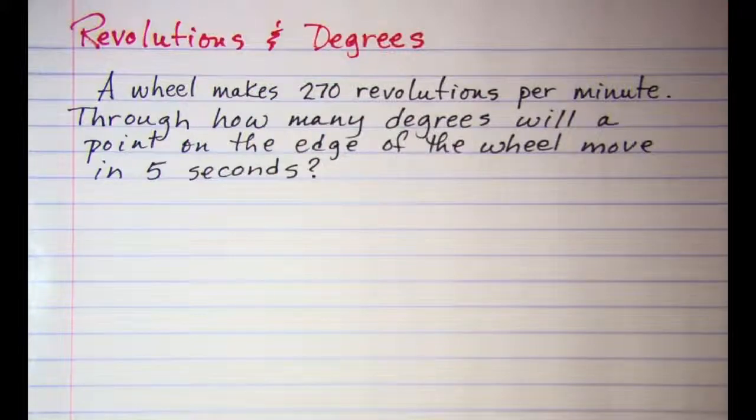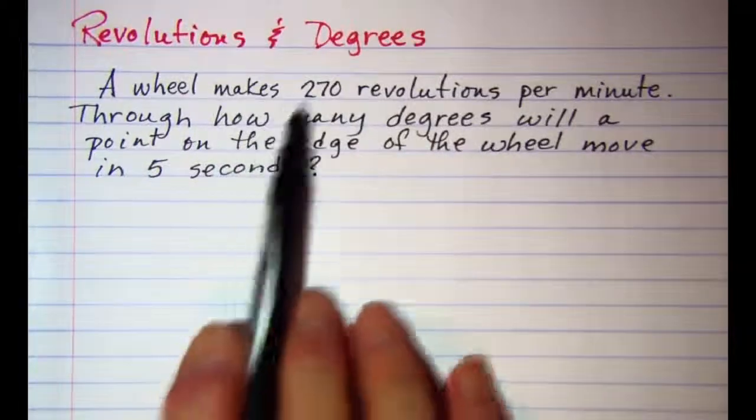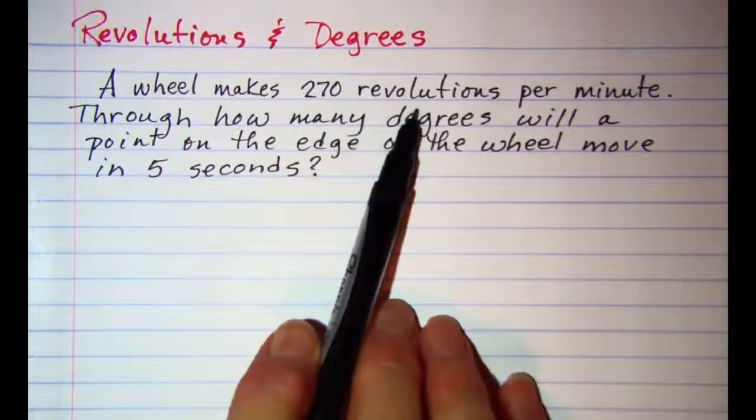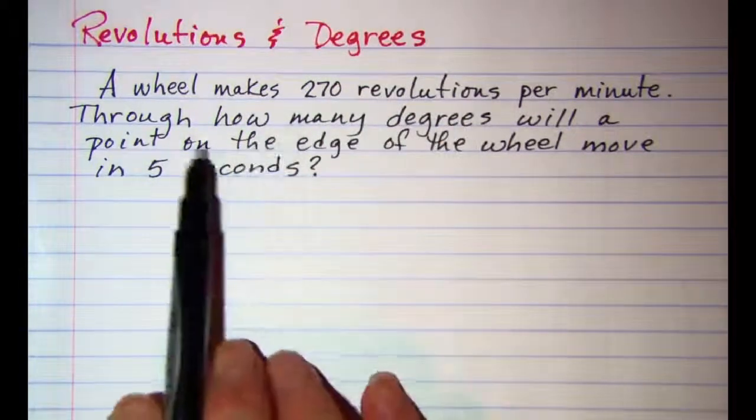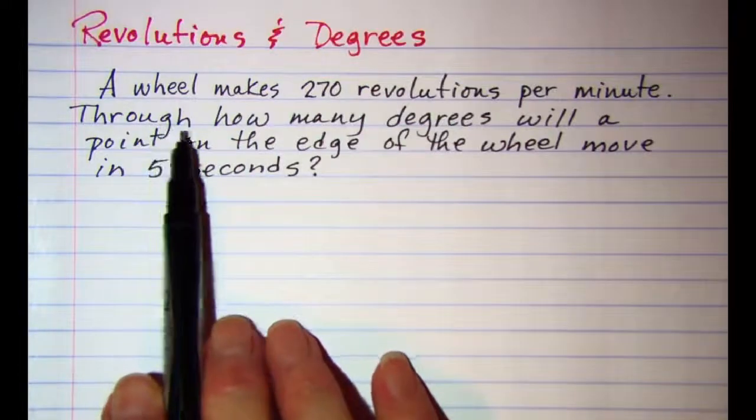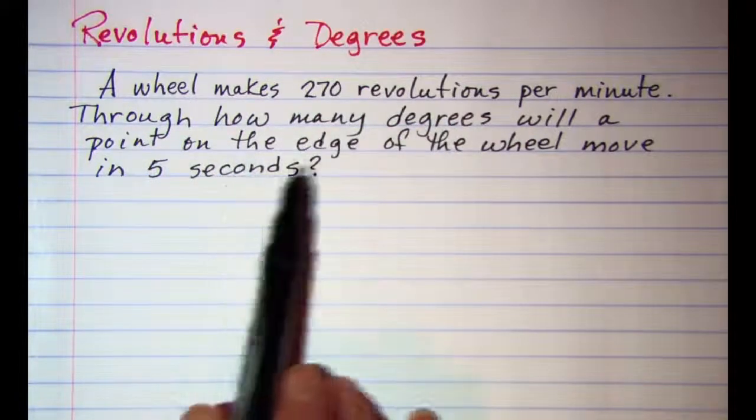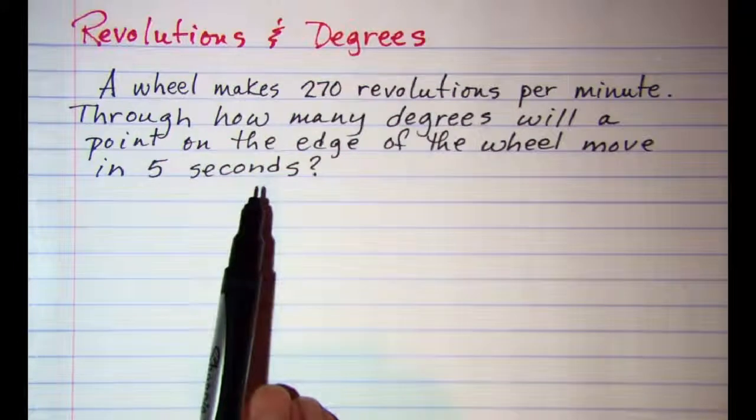So we have a wheel that makes 270 revolutions per minute, and we want to know through how many degrees will a point on the edge of the wheel move in 5 seconds.